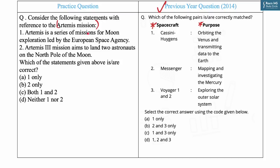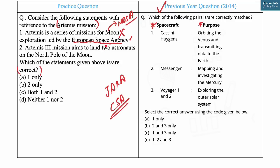The question asks: consider the following statements with reference to the Artemis mission and identify the correct statements. Statement one says Artemis is a series of missions for moon exploration led by the European Space Agency — this is incorrect. Artemis is led by NASA (National Aeronautics and Space Administration, USA), along with three partner agencies: ESA (European Space Agency), JAXA (Japanese Aerospace Agency), and CSA (Canadian Space Agency). ESA is a partner, not the leader.